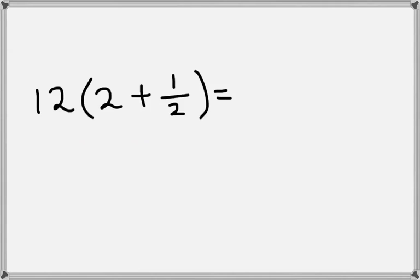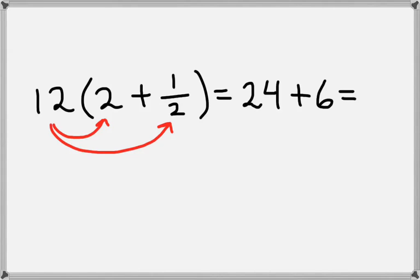Now we have 12 times 2 plus 1 half. So we'll distribute the 12. We'll multiply 12 by 2, which is 24, and then we'll multiply 12 by 1 half, which is 6. So we take 24 plus 6, which gives us 30.